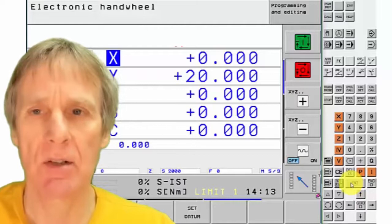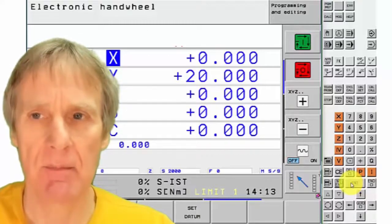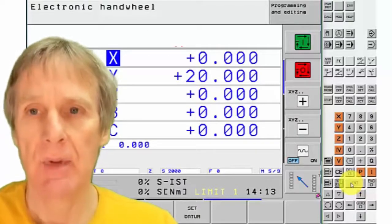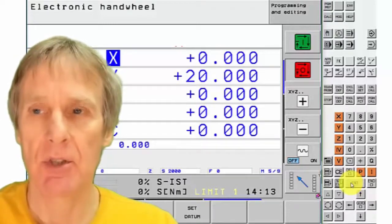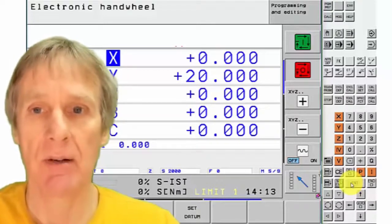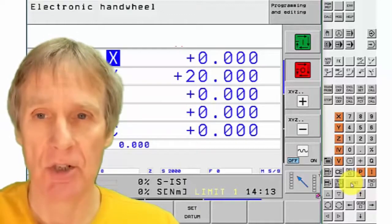You can use this in turn to set each axis. Once you've actually done this, it's a good idea to then physically move the machine using your hand wheel or whatever to this datum position just to check that you haven't got it wrong.